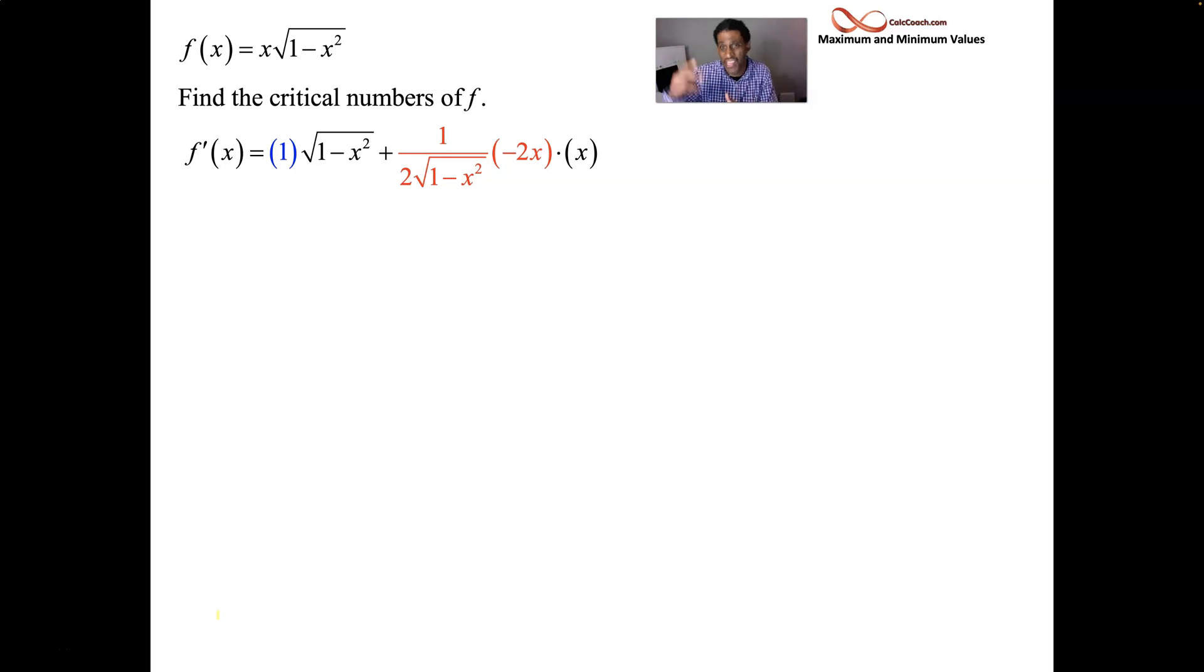If you have something that's raised to the half power, whatever the function might be, its derivative is one half that function to the negative one half power. And that's how I rewrote it in radical notation. And then chain rule says, wait, don't stop there. Derivative of the inside, got to multiply by that as well. So that is our derivative.